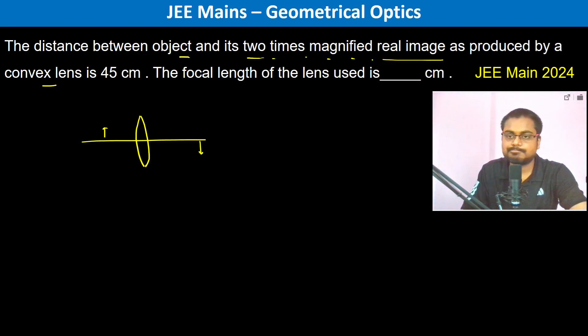If this is Y and this is X, we can see here X plus Y is equal to 45 centimeters. Now magnification is equal to V by U, which is equal to height of image divided by height of object. Therefore, V by U is equal to two times.